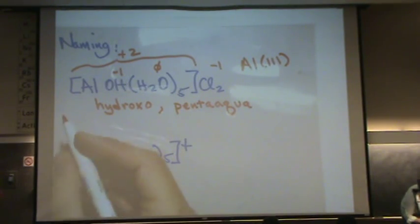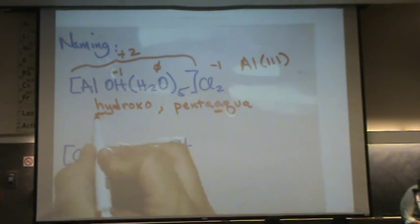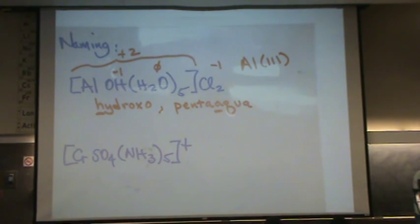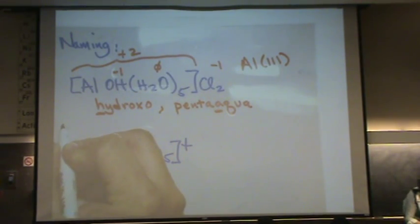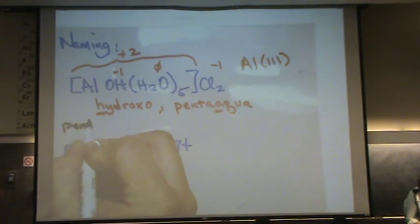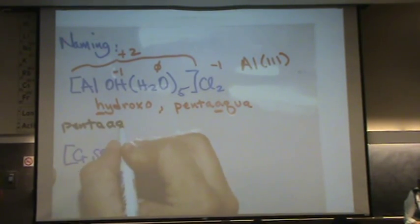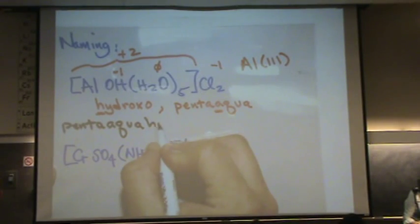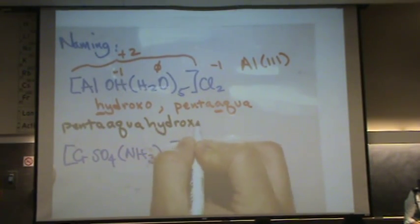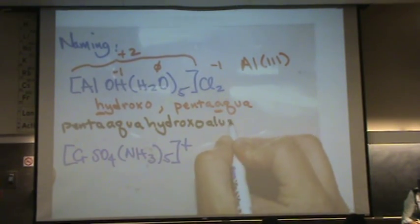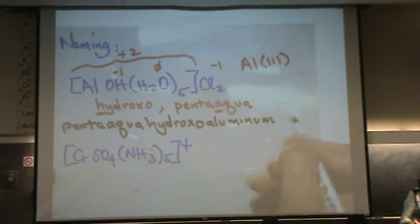So let's put that all together. We want the A in aqua to come before the H. So again, we don't take into account the prefixes that talk about the number. So that's a penta aqua hydroxyl aluminum three.